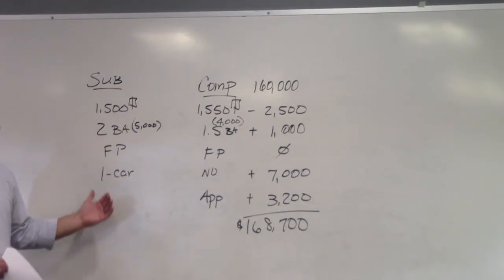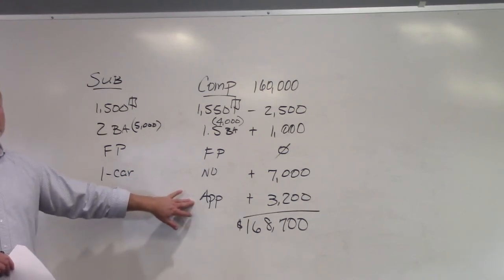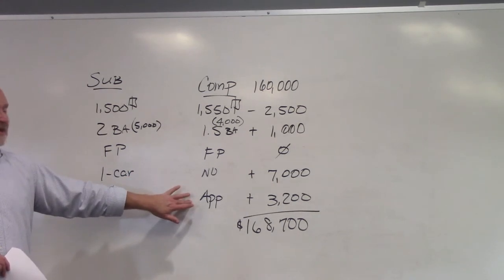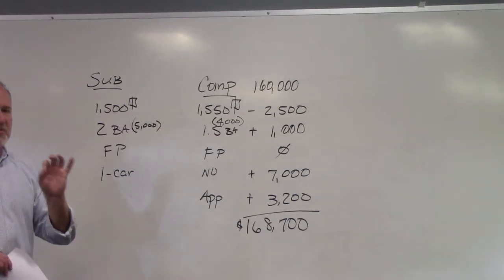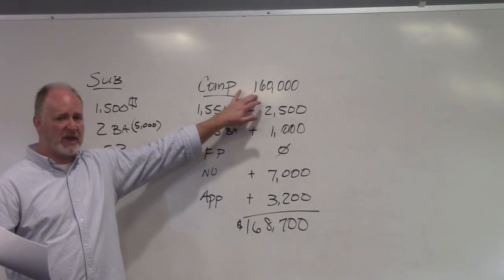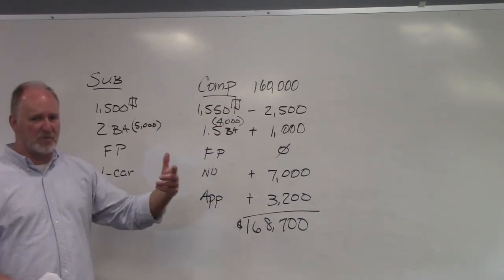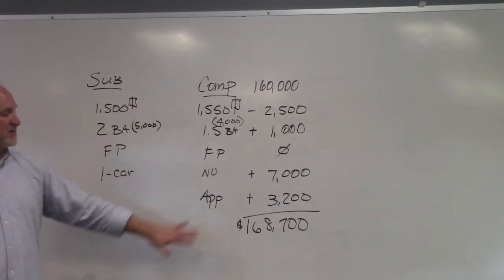Fireplace, no adjustment. Single car garage, simple enough, just plug in the number. Put another star beside appreciation. This is the most likely mistake, or the second most likely mistake that people will make. Notice that this appreciation is 2% since the date of sale. The comp sold for $160,000. In theory, it would have appreciated by $3,200, $160,000 times 2%. Appreciation is always a plus adjustment.